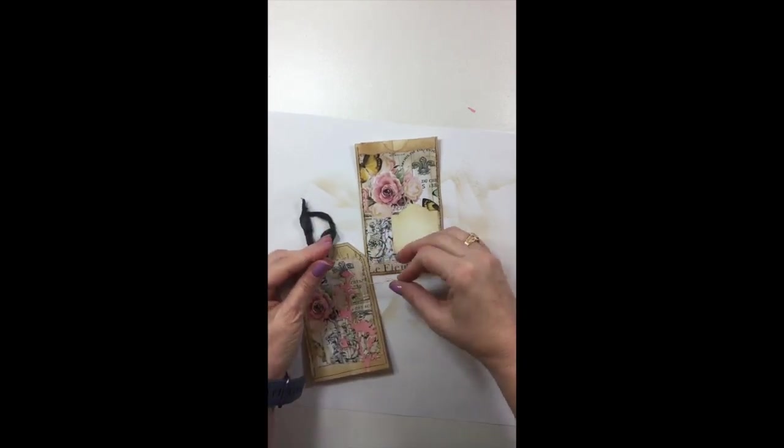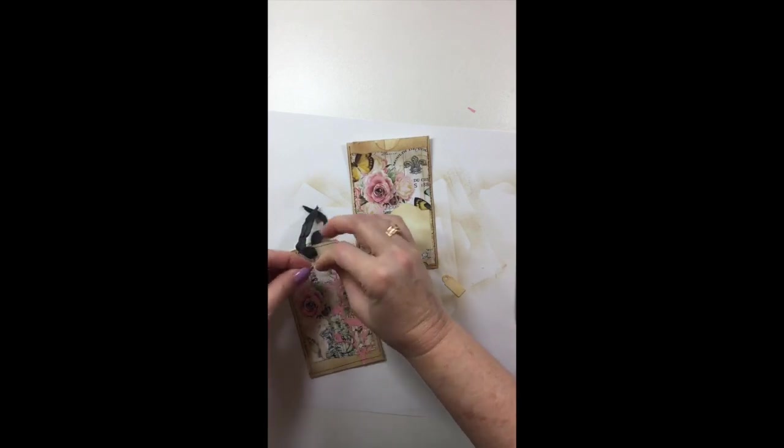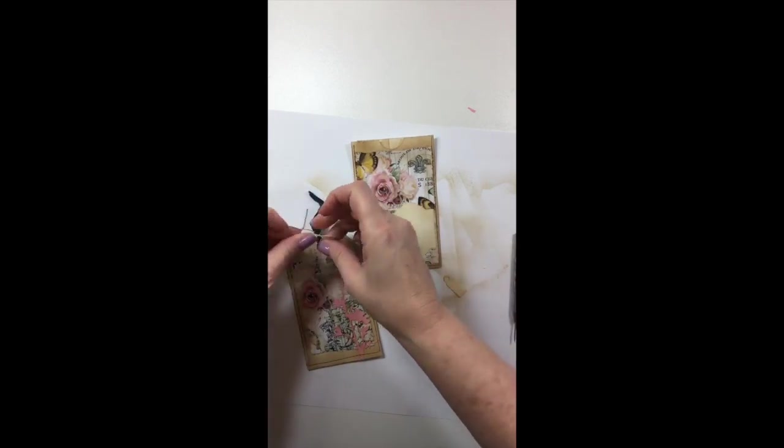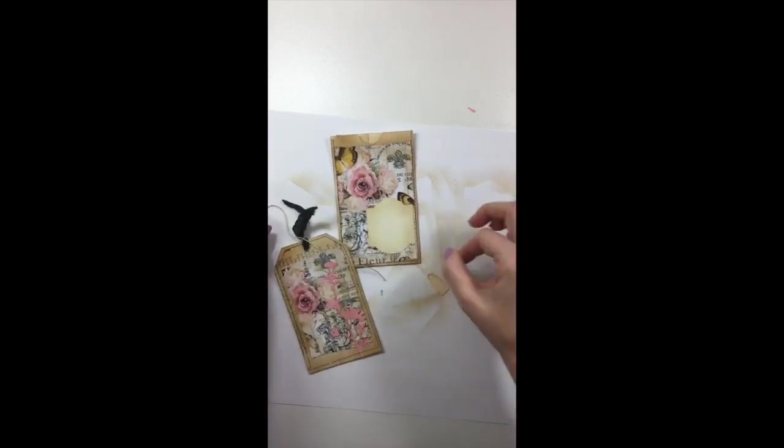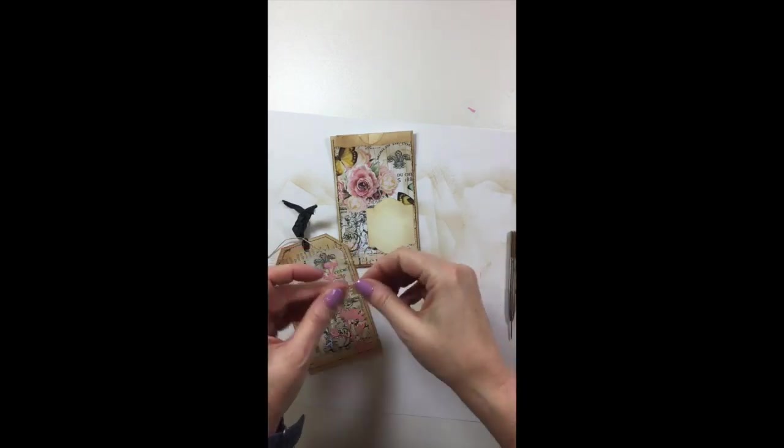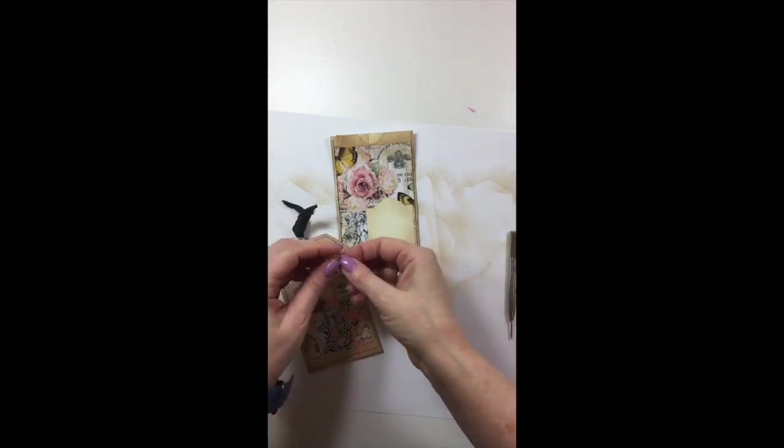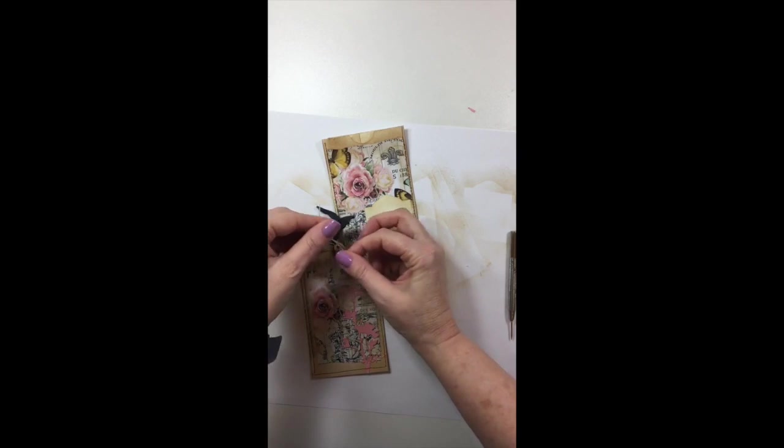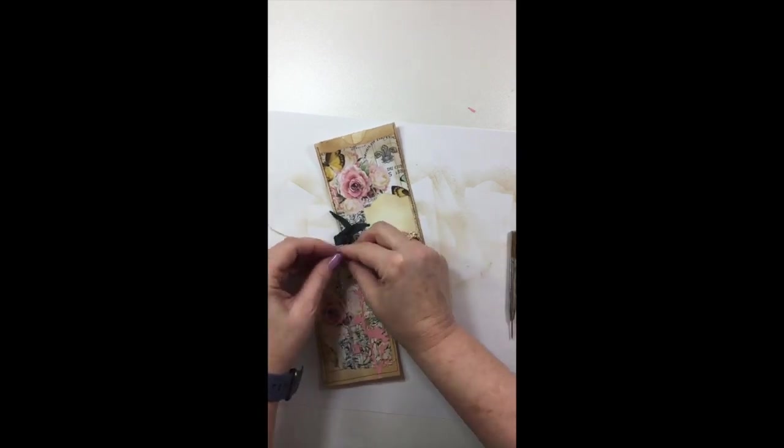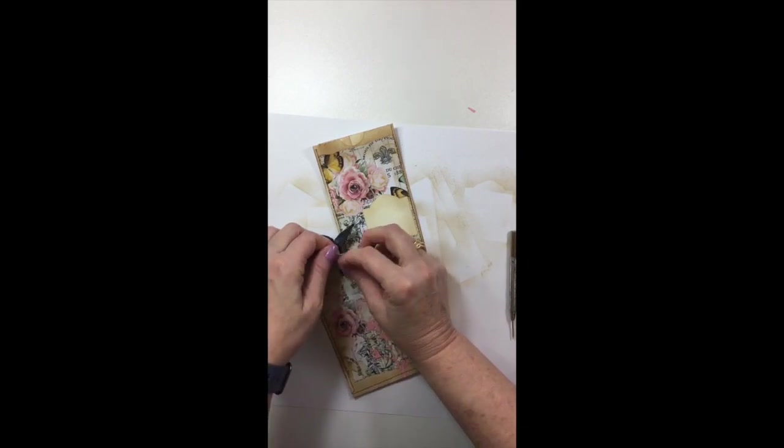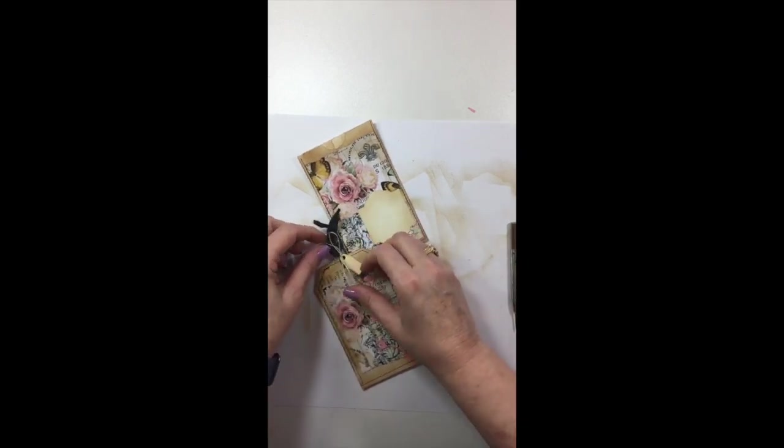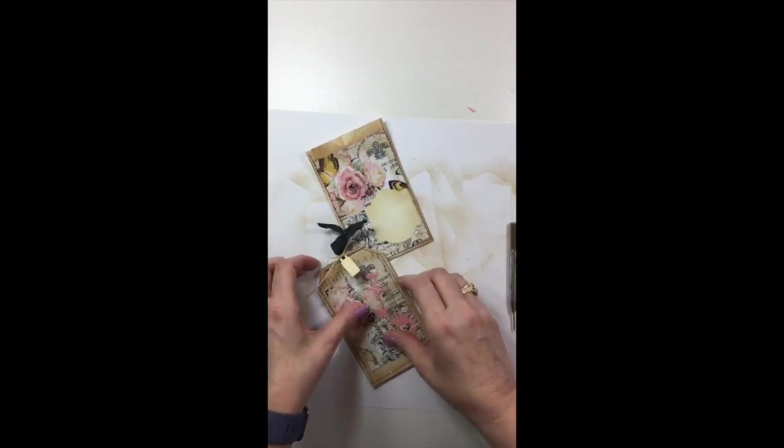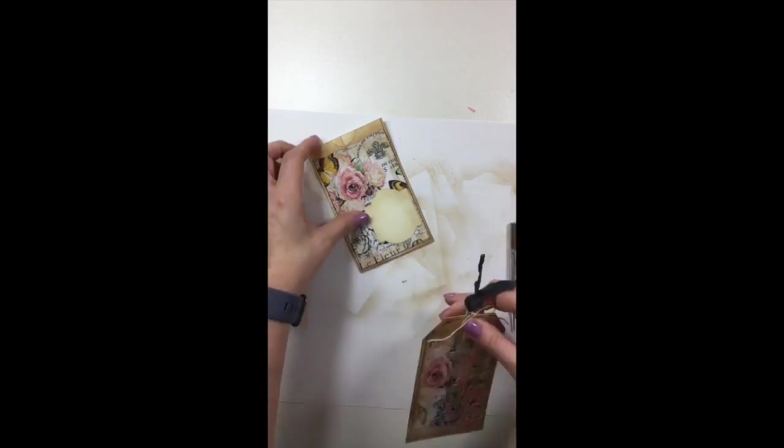So I just added some seam binding and a little bit of thread. And then I thought later I can come back and stamp what I want on the little tag. I'm just going to leave them plain for now because I'm not sure what they're going to go into. I haven't started a journal. But I have got to start using up some of these book pages. And I wanted to, like I said, revisit some of these projects that I've done in the past.